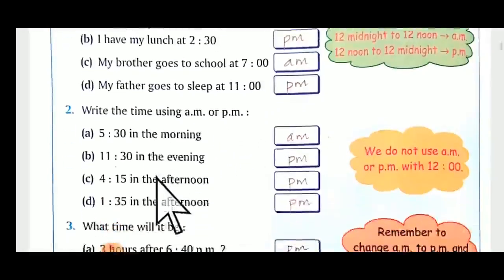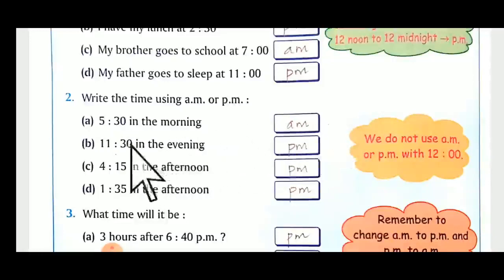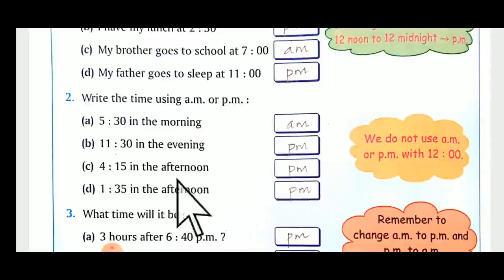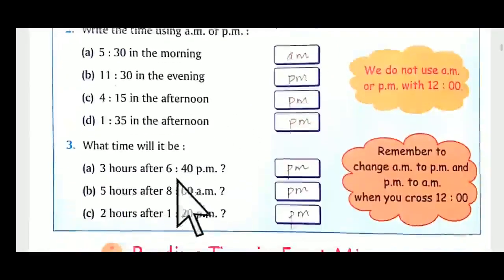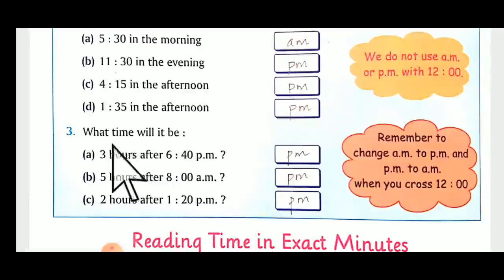Write the time using AM or PM: five thirty in the morning — it is AM. Eleven thirty in the evening — that means it will be PM, evening is night time. Four fifteen in the afternoon — it will be PM; if it was morning it would have been AM. One thirty-five in the afternoon — that means it is PM.